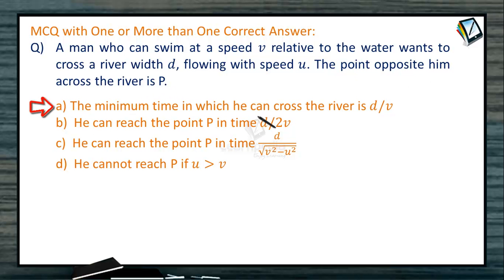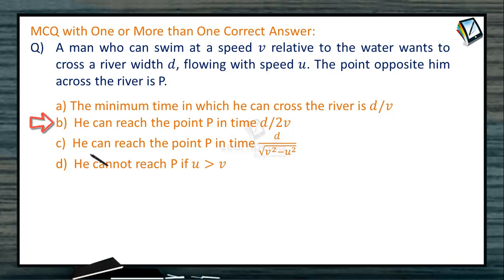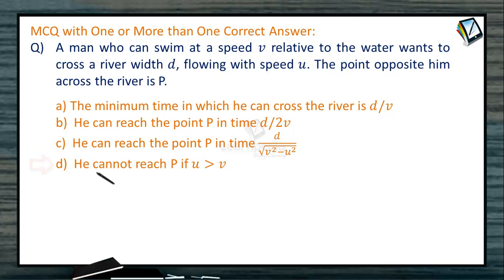The answer options are: (A) The minimum time in which he can cross the river is D/V. (B) He can reach the point P in time D/2V. (C) He can reach the point P in time D/√(V²−U²). (D) He cannot reach the point P if U is greater than V.